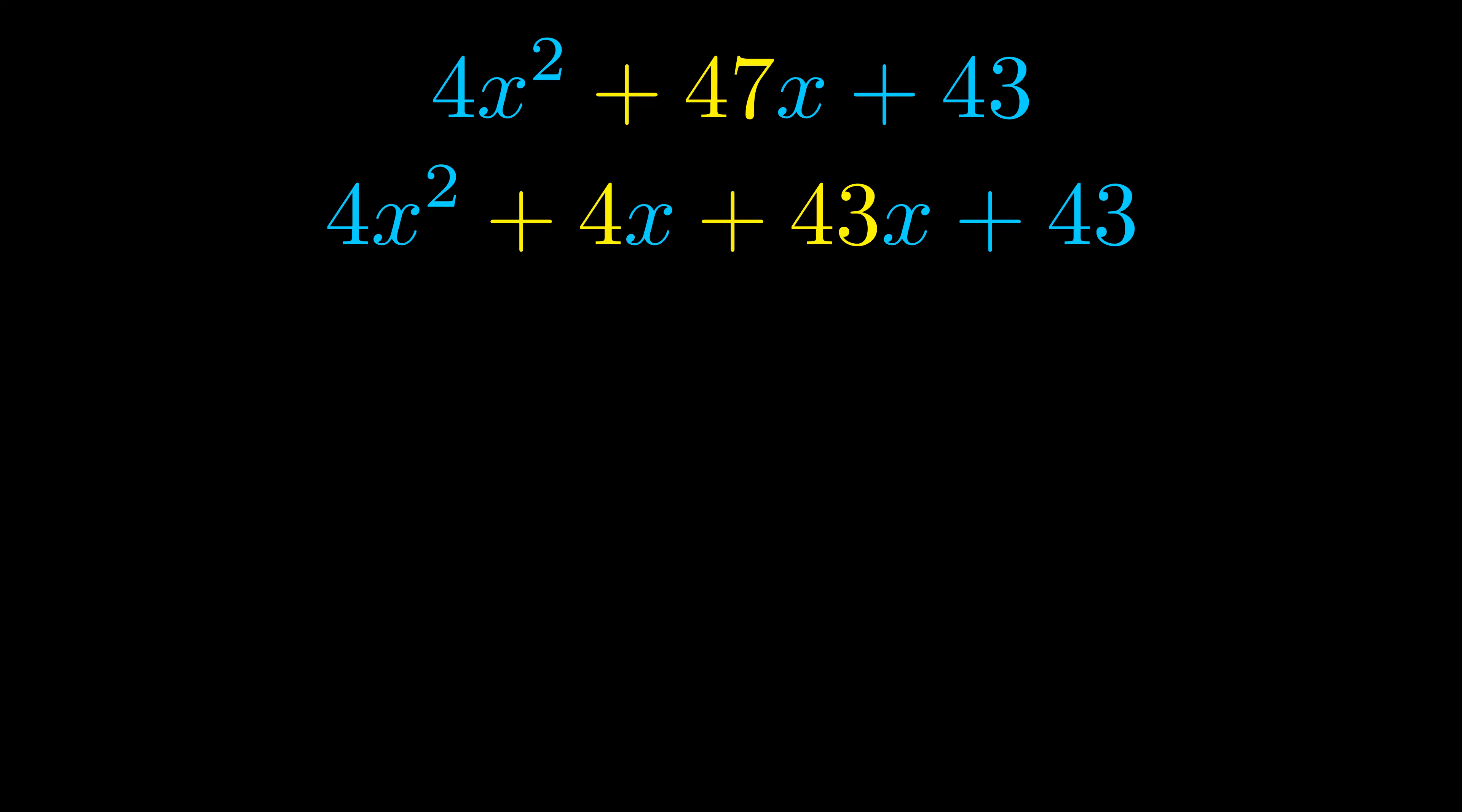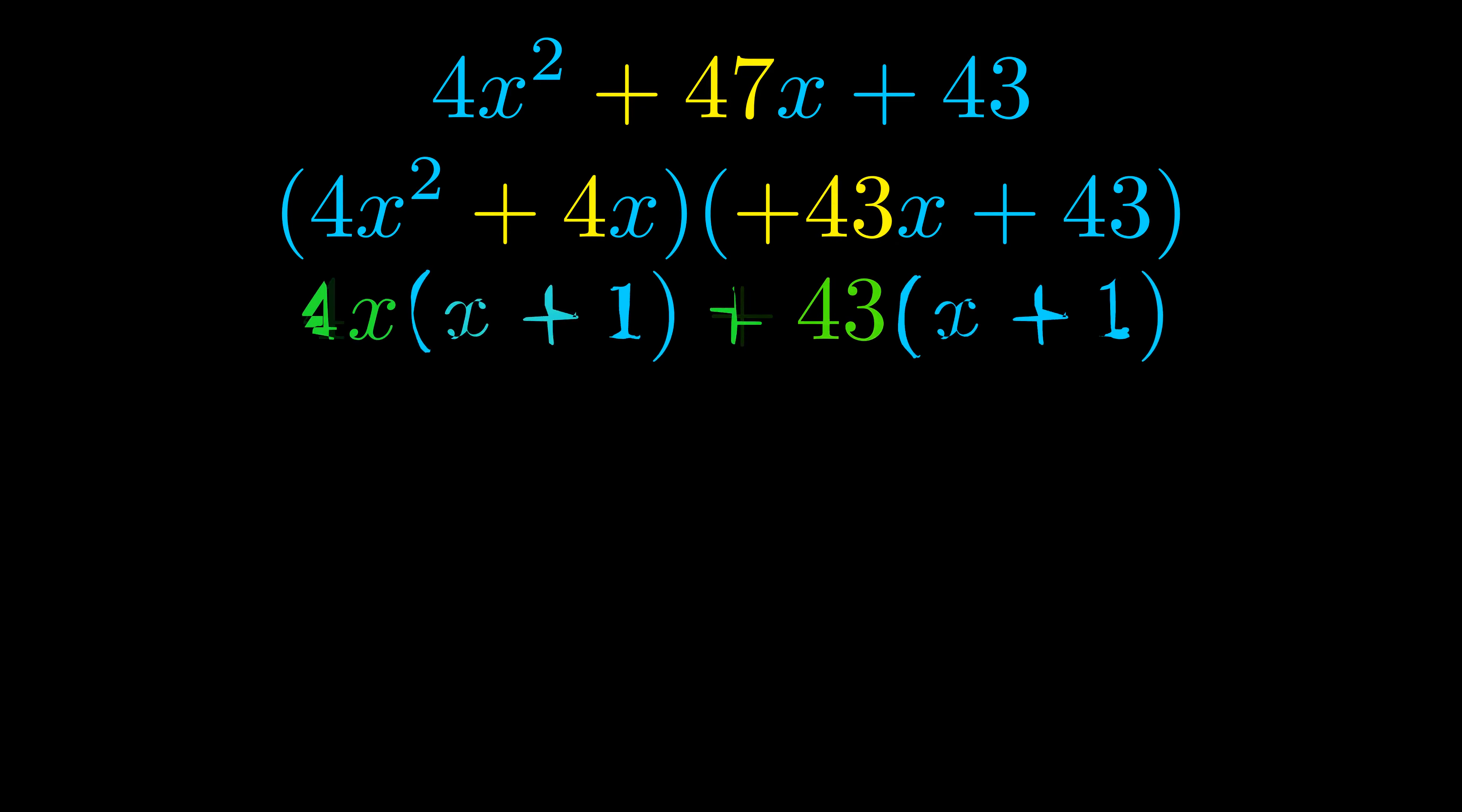Once we've done this we go ahead and we put parentheses around the first term and the last term. And we do that so that we can take the greatest common factor out of both terms. We can see the greatest common factor is now outside in green.